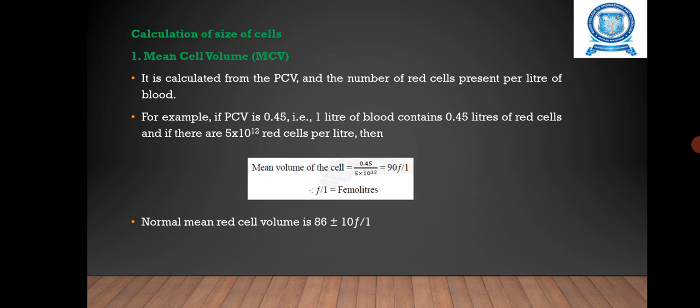This equals 90 femtoliters. So the normal mean cell volume is 86 ± 10 femtoliters.